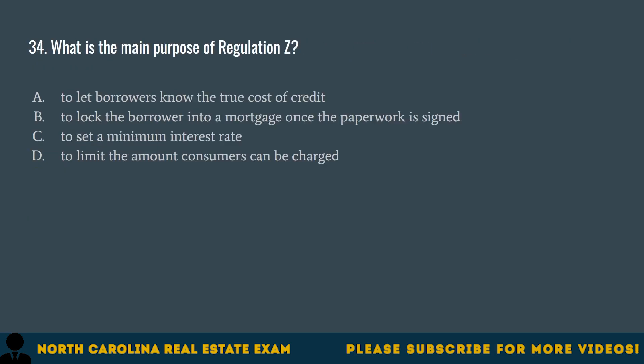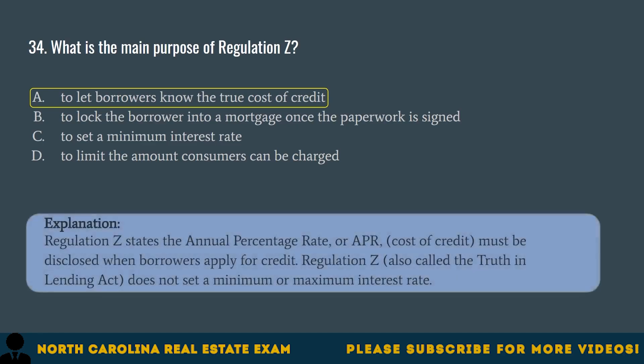Question 34. What is the main purpose of Regulation Z? A. To let borrowers know the true cost of credit. B. To lock the borrower into a mortgage once the paperwork is signed. C. To set a minimum interest rate. D. To limit the amount consumers can be charged. The correct answer is A. To let borrowers know the true cost of credit. Regulation Z states the annual percentage rate, or APR, and cost of credit must be disclosed when borrowers apply for credit. Regulation Z, also called the Truth in Lending Act, does not set a minimum or maximum interest rate.